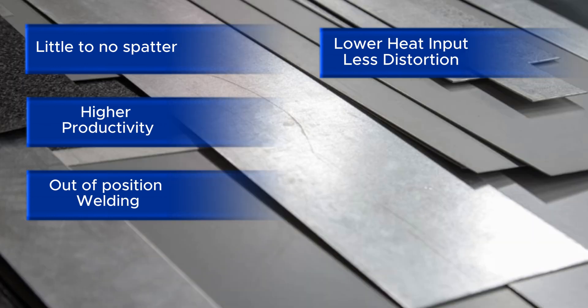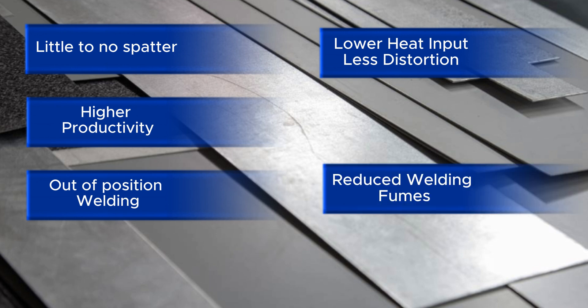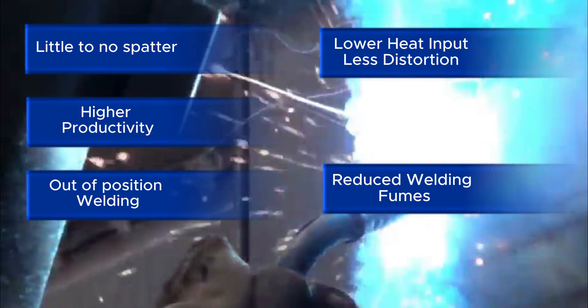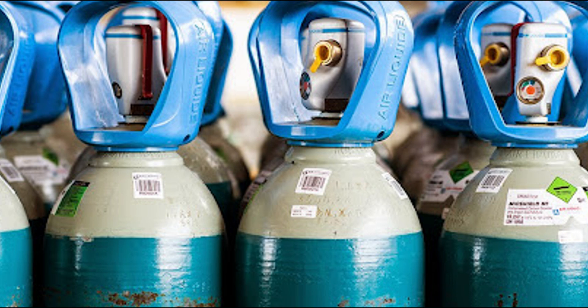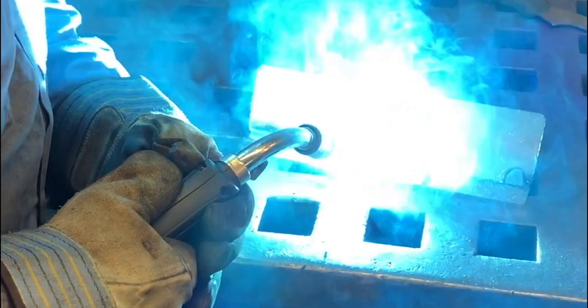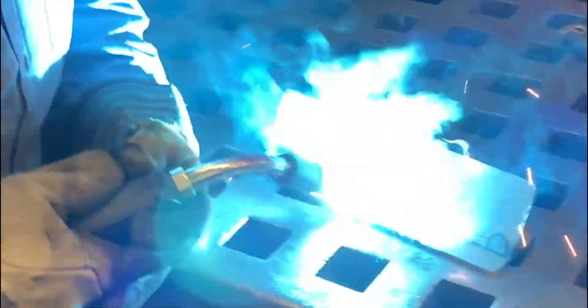Pulsed spray is also excellent for thin materials. At a given wire feed speed, it has a lower average amperage than spray, making it ideal for sheet metal where short arc might be too slow. As a bonus, pulsed spray transfer can reduce fume levels compared to all other modes. However, the equipment is more expensive due to its advanced hardware, and the required gas blends are also typically pricier. While it produces less radiated heat than standard spray, the arc is still very bright and can be uncomfortable for the welder compared to short-circuit or globular.